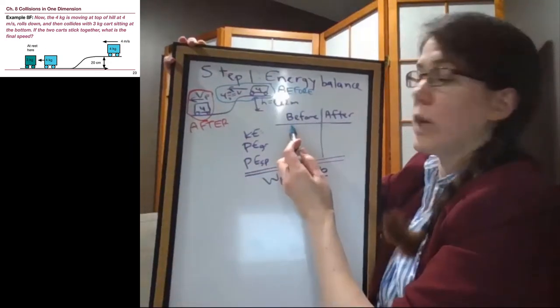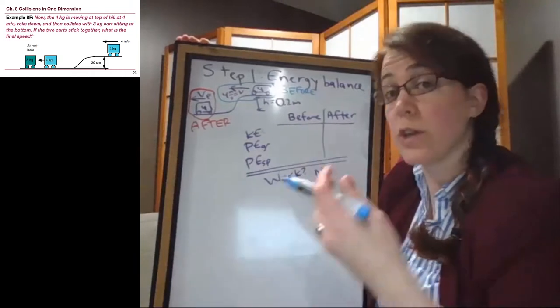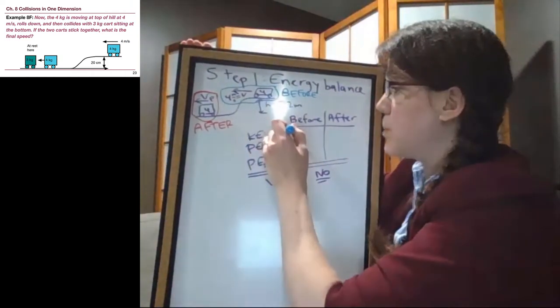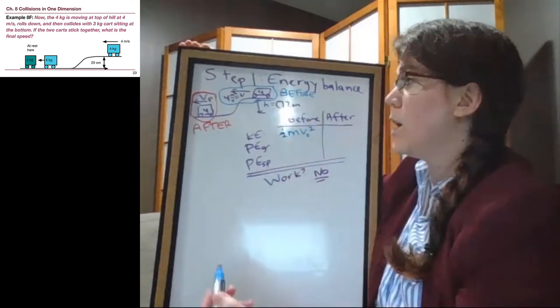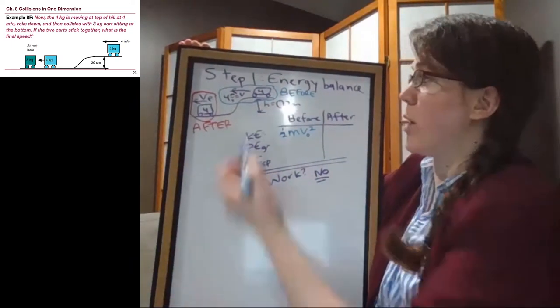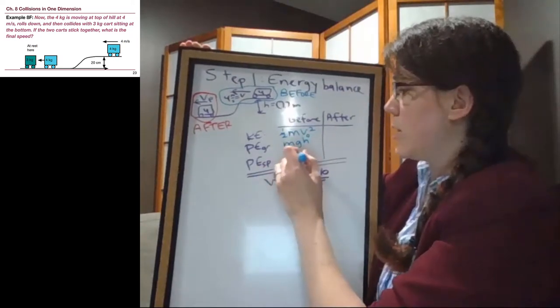In the before situation, we ask ourselves, are we moving? Never meant to be a trick question. We are given that speed, and so absolutely we are moving at the start of the problem. Are we higher at the start of the problem? We are. We're at the top of the hill, MGH, and there's no spring.